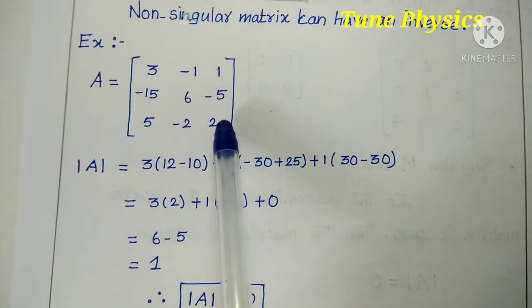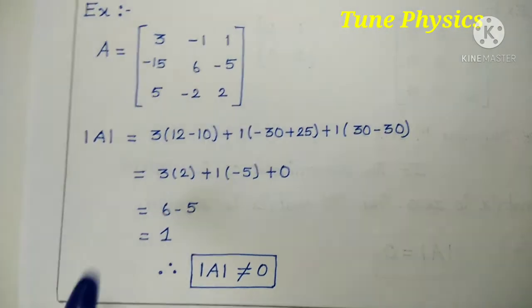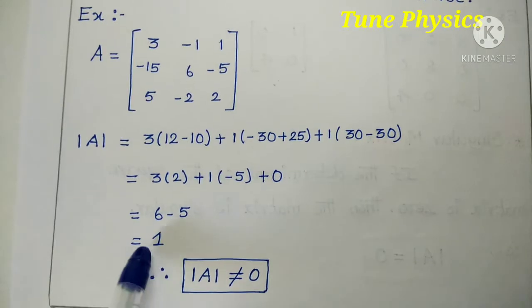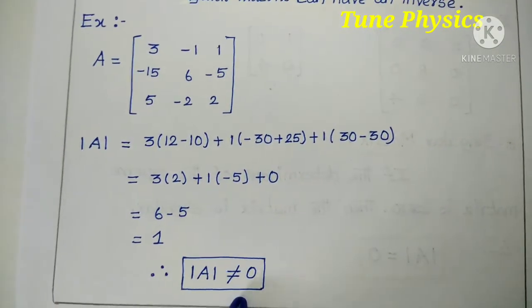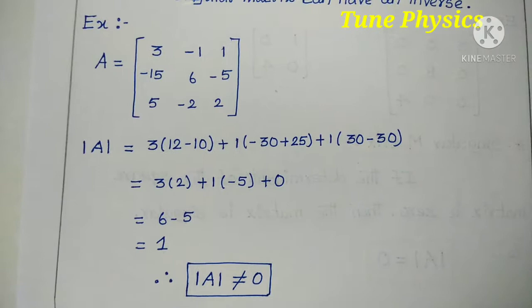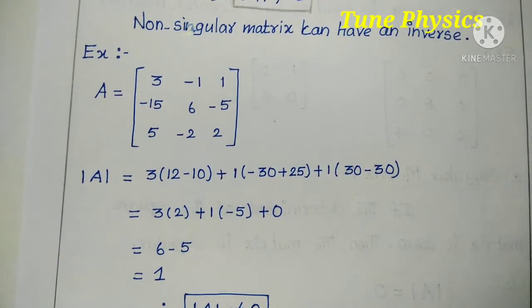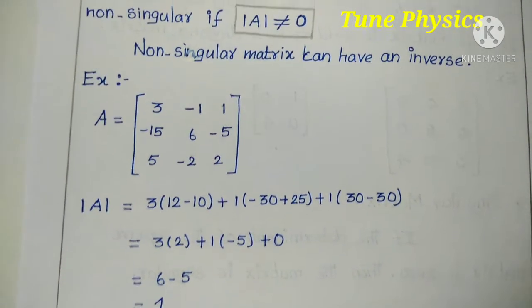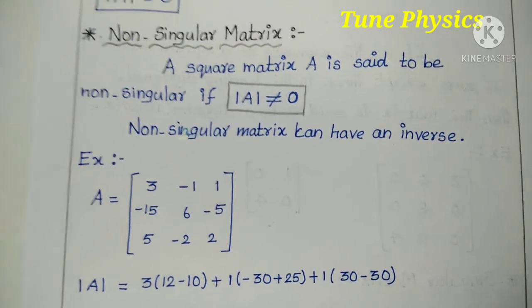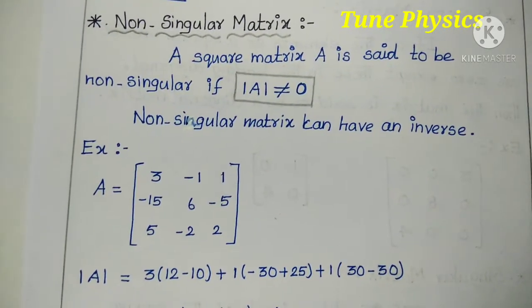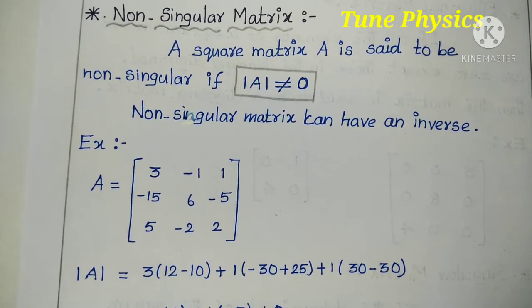Finding the determinant: simplifying gives a value of 1. Since 1 is not equal to 0, this matrix is non-singular.